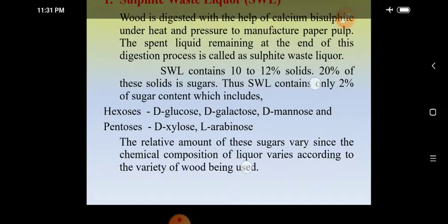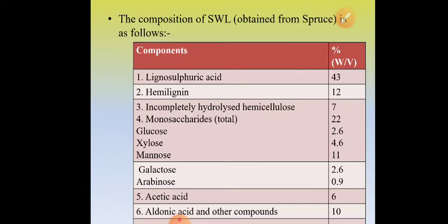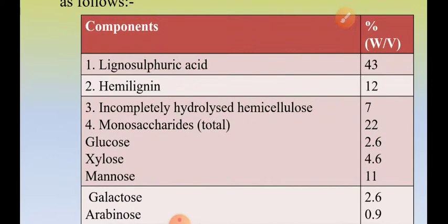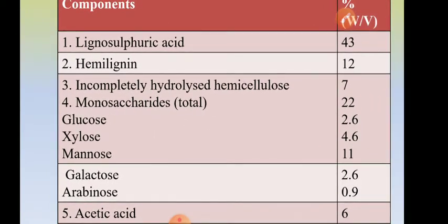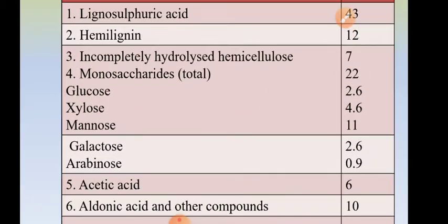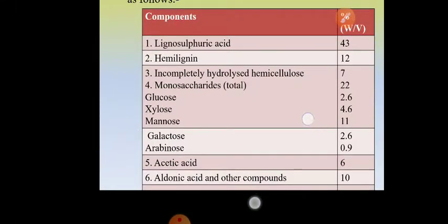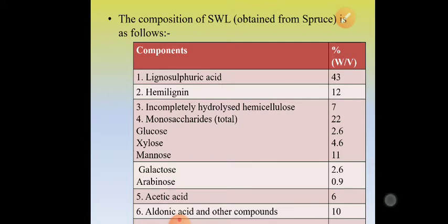The relative sugar composition varies according to the variety of wood used for paper pulp making. For spruce wood, the average composition of sulfite waste liqueur is: lignosulfuric acid 43% w/v, hemilignin and incompletely hydrolyzed semihemicellulose and uronic acid 7%, total monosaccharides 20% (including D-glucose, D-xylose, D-mannose, galactose, arabinose), plus acetic acid, aldonic acid, and other compounds.